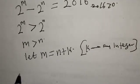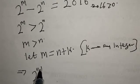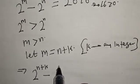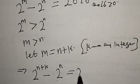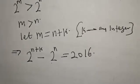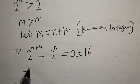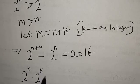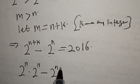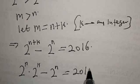Then this implies that 2 raised to power n plus k minus 2 raised to power n is equal to 2016. This can be written as 2 raised to power n times 2 raised to power k minus 2 raised to power n, which is equal to 2016.